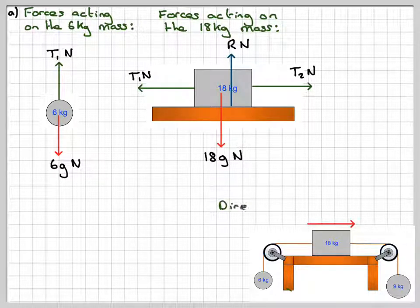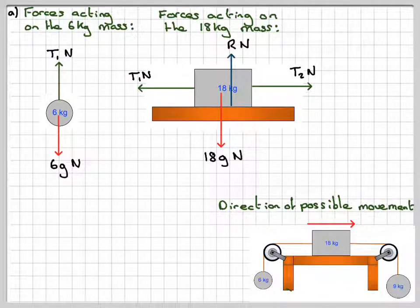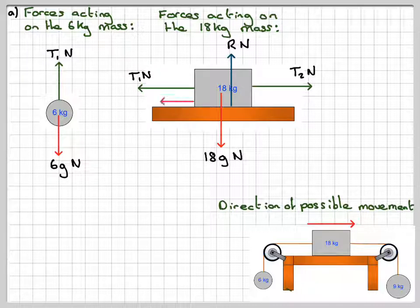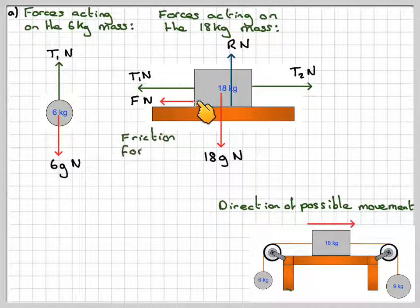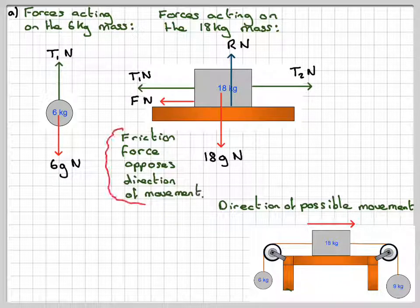Now, the direction of movement will be this way, because this weighs more than this one for any possible movement. And therefore, if it's in equilibrium, then we have this frictional force here, which opposes the direction of the movement.